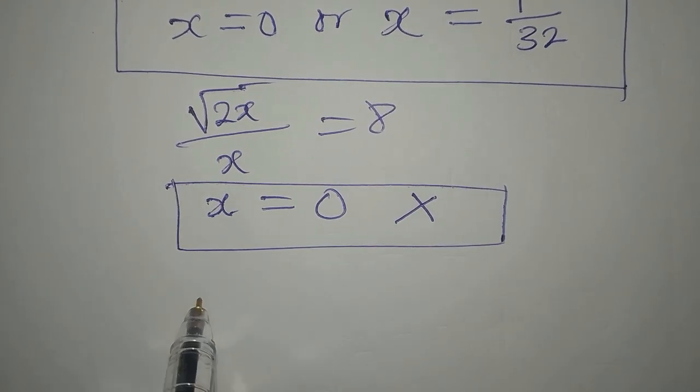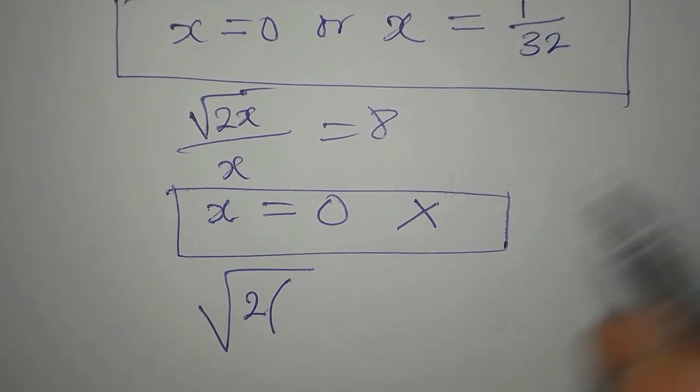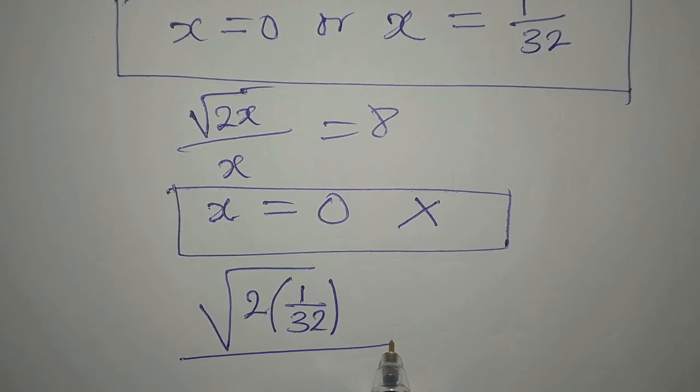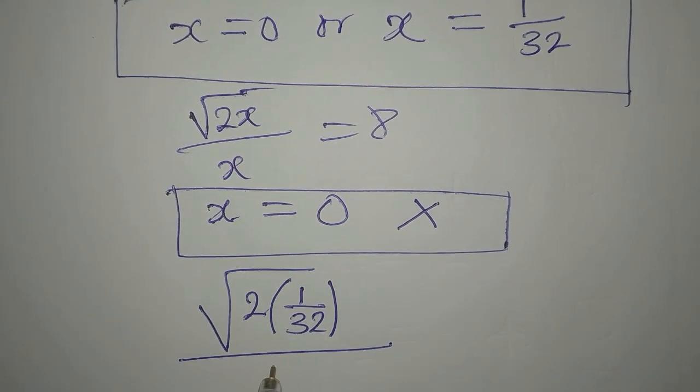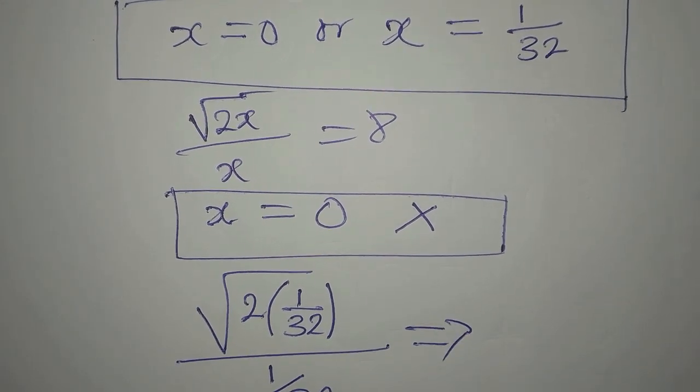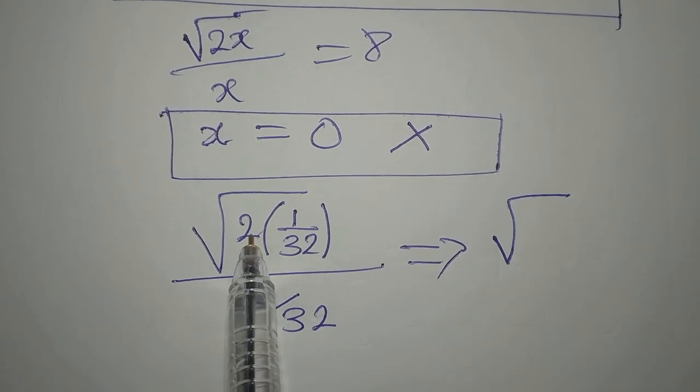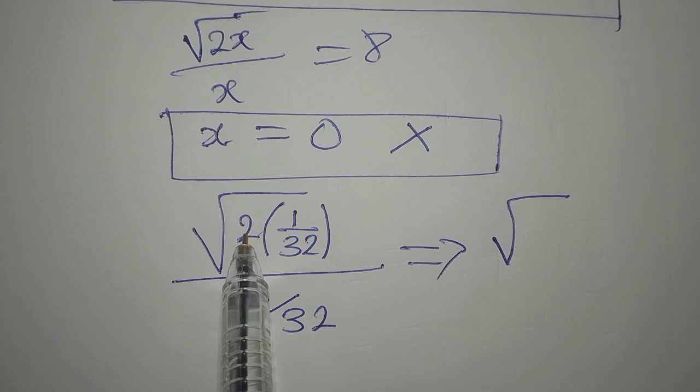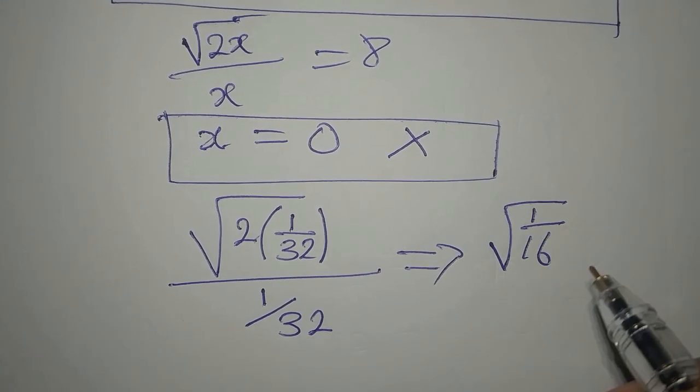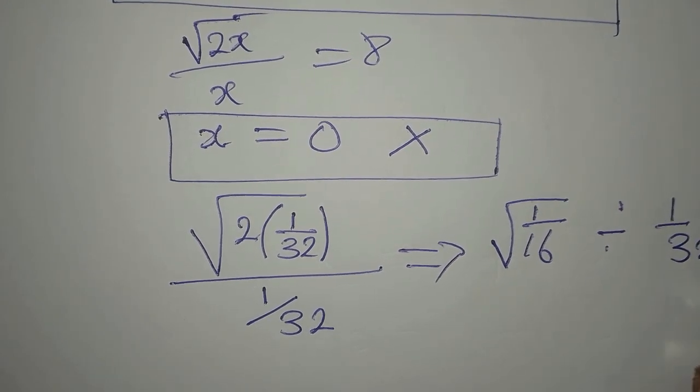So we are going to have square root of, in place of 2x, it's going to be 2 times 1 over 32. So we write 1 over 32. Then the whole of this is divided by x, and x is now 1 over 32. Now let's work it down here. This means that we have square root of 2 into 32 is going to give us 16. So we have square root of 1 over 16, and we are dividing this by 1 over 32.